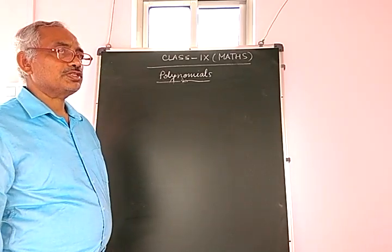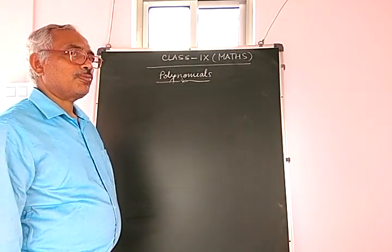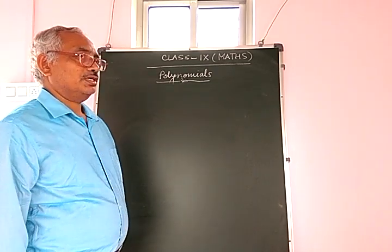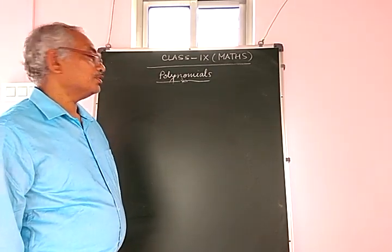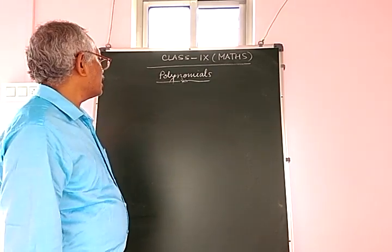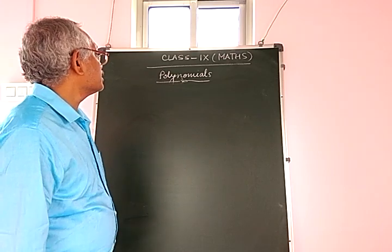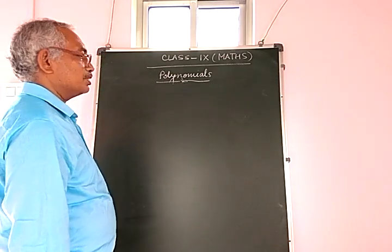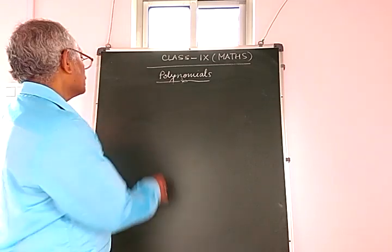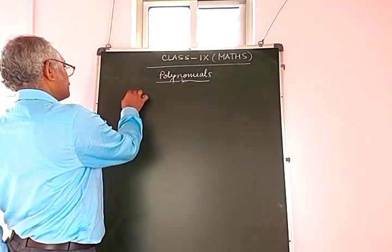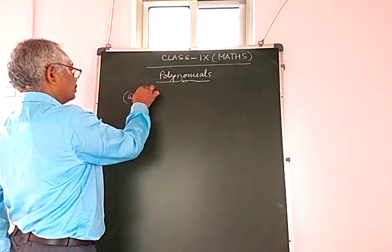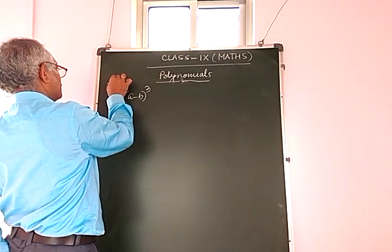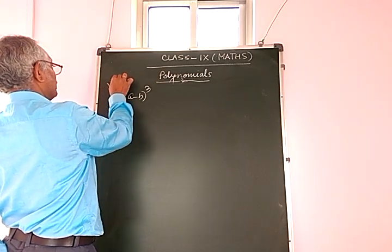In the previous video, I discussed the identity (A + B)³. Today, I will discuss the identity (A - B)³. This is the seventh identity.